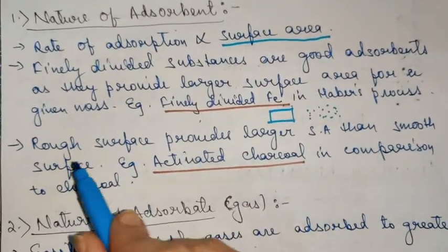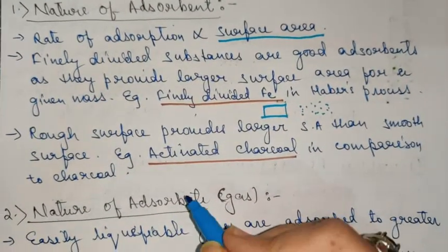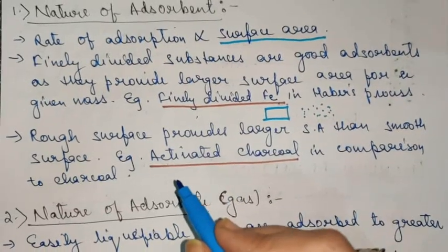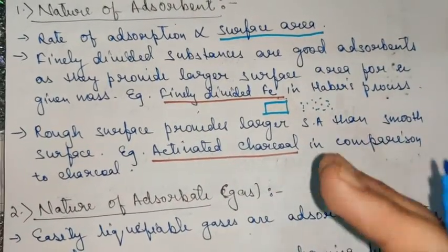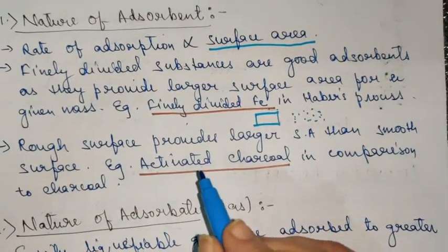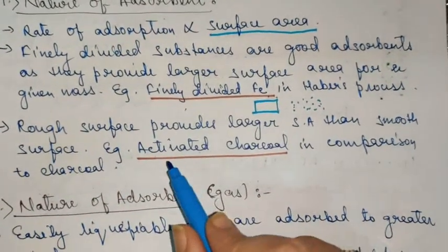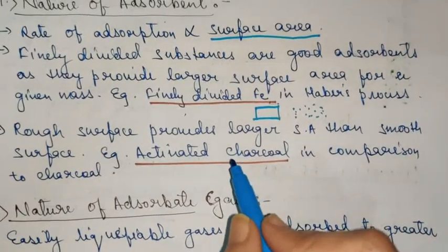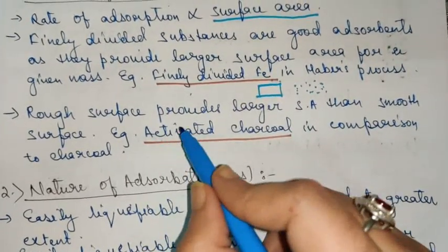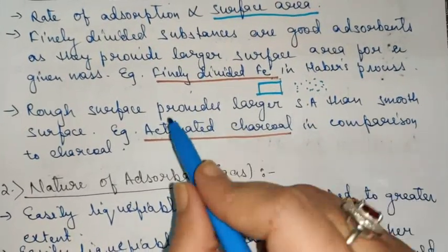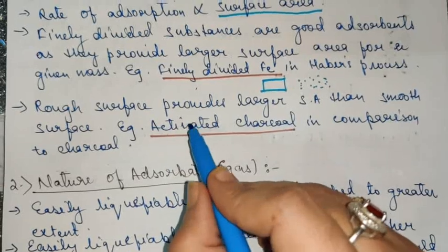Rough surfaces provide larger surface area than smooth surfaces. If the surface has many cracks and crevices, those convolutions — ridges and grooves — provide larger surface area for adsorption to occur. Smooth surfaces do not provide as much surface area. For example, activated charcoal in comparison to normal charcoal: activated charcoal has more rough surfaces, so its surface area is more. You may have heard about activated charcoal in commercials — face creams and beauty products.